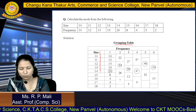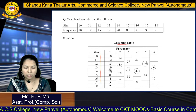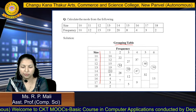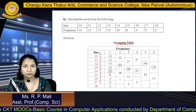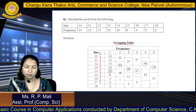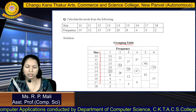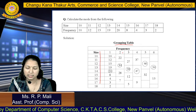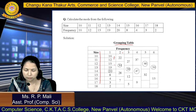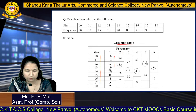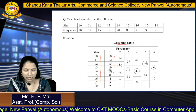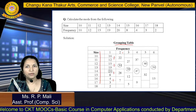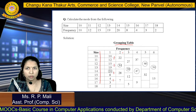In the first column, write all the frequencies as they are: 10, 12, 15, 19, 20, 8, 4, 3, and 2. In the second column, group the frequencies in 2's: 10 plus 12 equals 22; 15 plus 19 equals 34; 20 plus 8 equals 28; 4 plus 3 equals 7. Only one frequency (2) remains, so we leave that frequency.